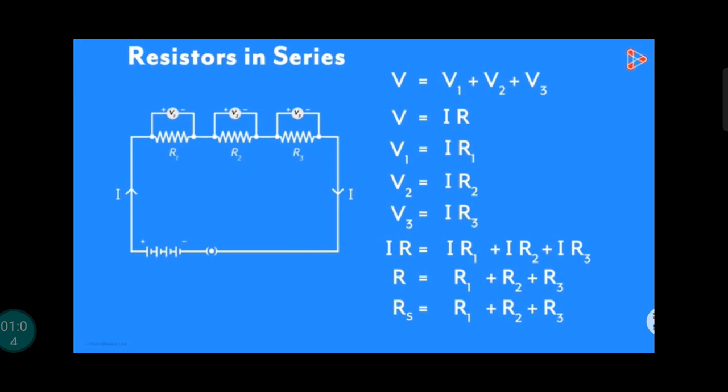As the current flows through each resistor is same, substituting all the Ohm's law equations in the main equation, V is equal to V1 plus V2 plus V3. So V is equal to IR is equal to IR1 plus IR2 plus IR3.